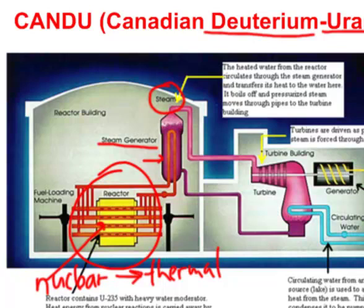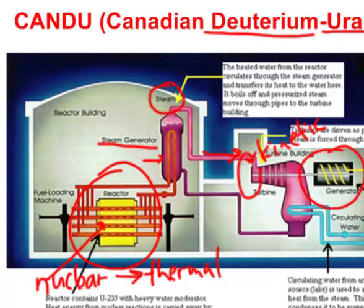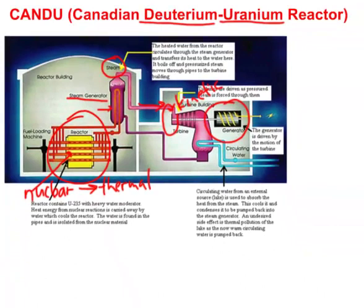The steam travels through a pipe into the turbine, causing it to spin at a very high rate of speed — generating kinetic energy. That turbine is connected to a generator with copper wire inside a magnetic field. When the generator turns, we create electrical energy. So: nuclear energy → thermal energy → kinetic energy → electrical energy.